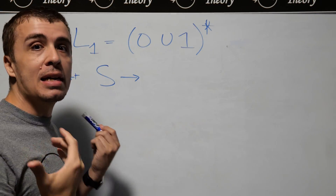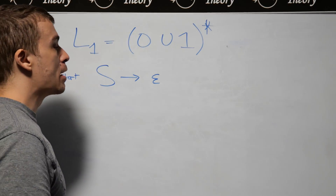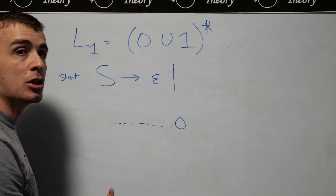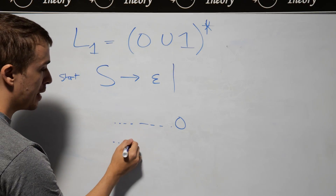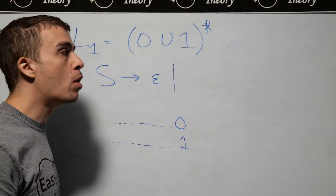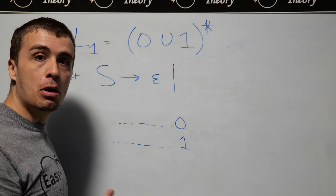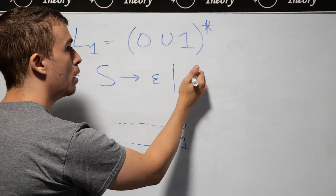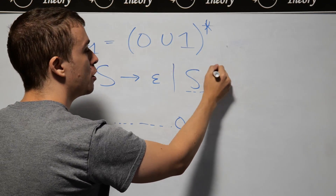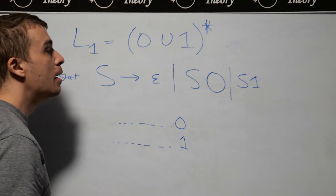One string that is obviously in this set is the empty string, so I need to allow ourselves to make the empty string. But we also have that no matter what string we've made so far, we can always add a zero on to the end of it — that's also a valid string — or we may allow ourselves to add a one at the end. And no matter what string we have, it's either empty, or it ends in a zero, or it ends in a one. Therefore, this S corresponds to what we've made so far, and we need to allow ourselves to make a zero or a one afterward.